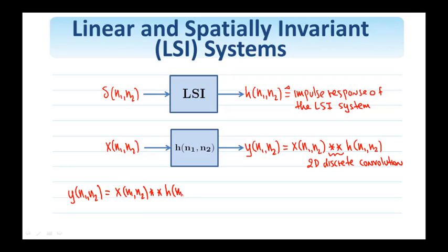The convolution of x with h, as we will show, is equal to this superposition sum: k1 minus infinity to infinity, k2 minus infinity to infinity, x(k1, k2), h(n1 minus k1, n2 minus k2).